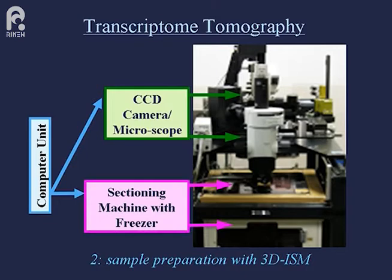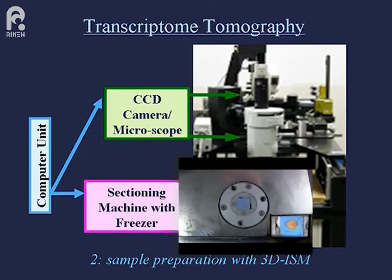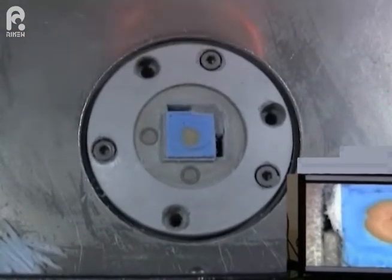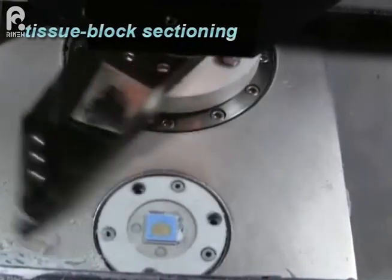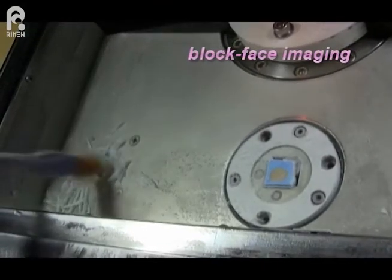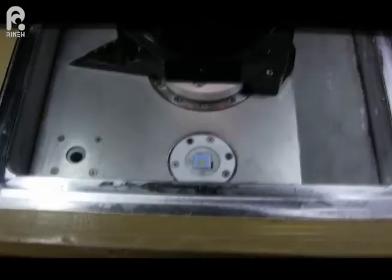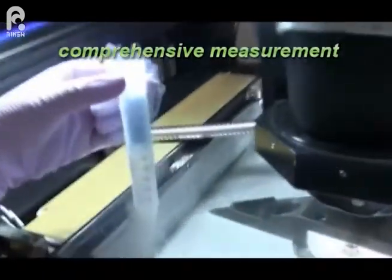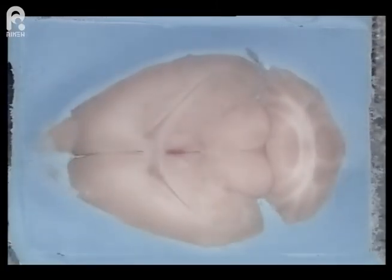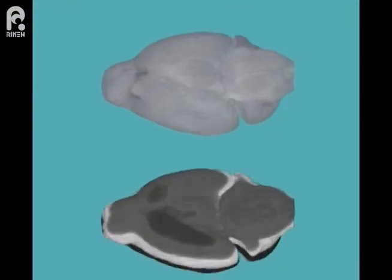Materials are prepared with the sectioning machine 3D-ISM, which we originally designed. This technique is based on conjugation of sequential tissue block sectioning and block face imaging. All the sliced tissues are collected as fractions and used for comprehensive measurements of expression densities. The block face imaging, showing exact anatomical information of the fractions, is used for image construction.